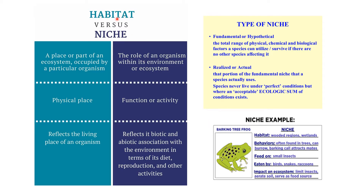A place or part of an ecosystem occupied by an organism is known as its habitat. Niche is the role of an organism within its environment or ecosystem. Habitat includes only the physical place — where they live — while niche includes the function or activity of that organism in the environment, reflecting its biotic and abiotic association in terms of its diet, reproduction and other activities.